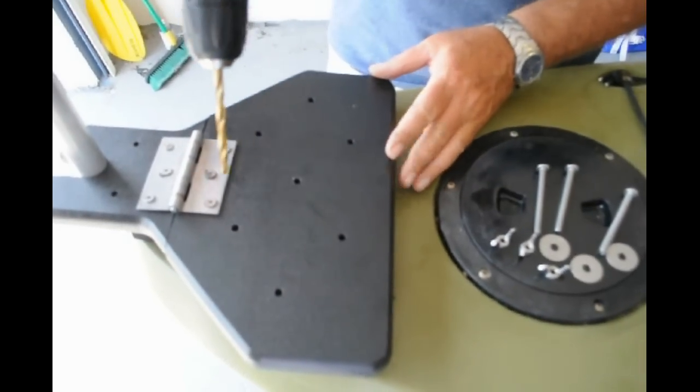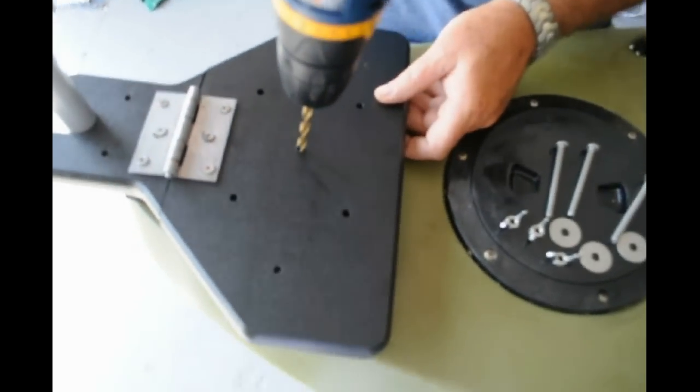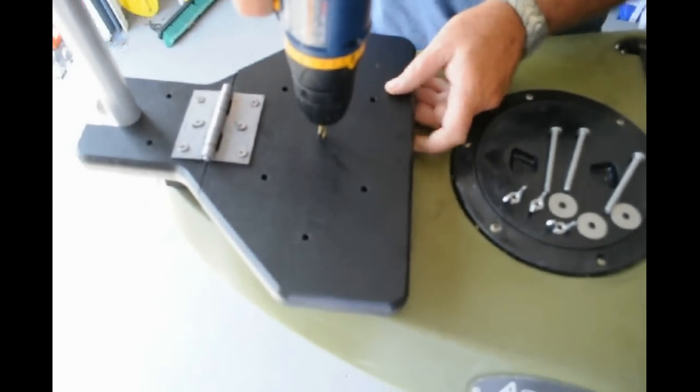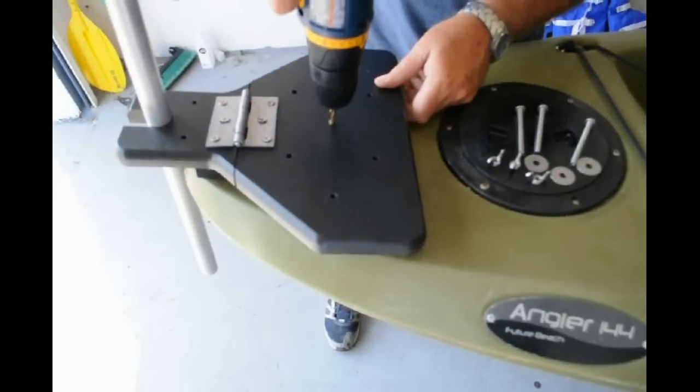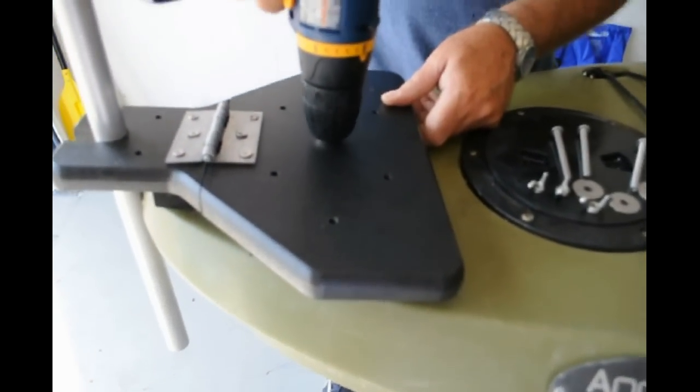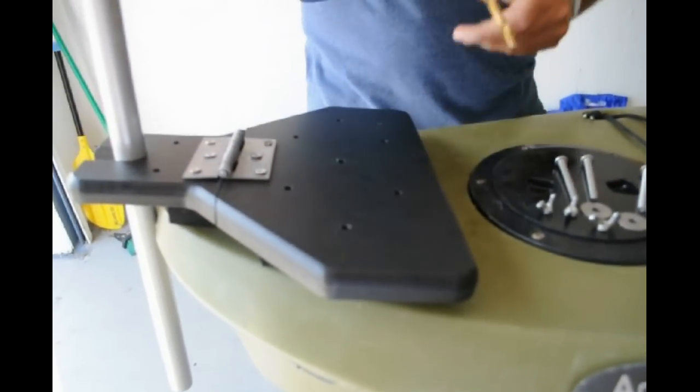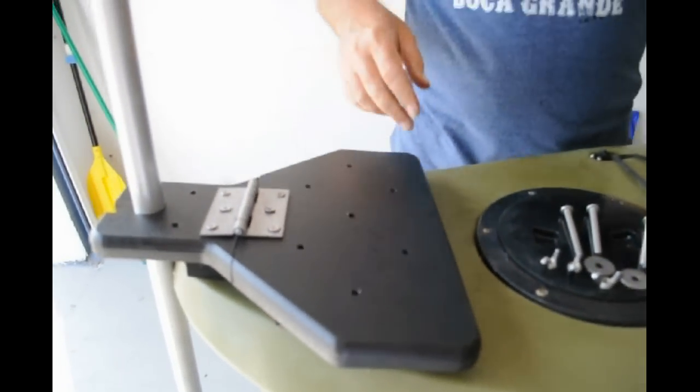We're going to take three of the holes, these three holes here, and we're going to screw right through the holes using a quarter inch bit and go right into the kayak. Now I'm only going to do one right now to show you how easy it is to put this on.